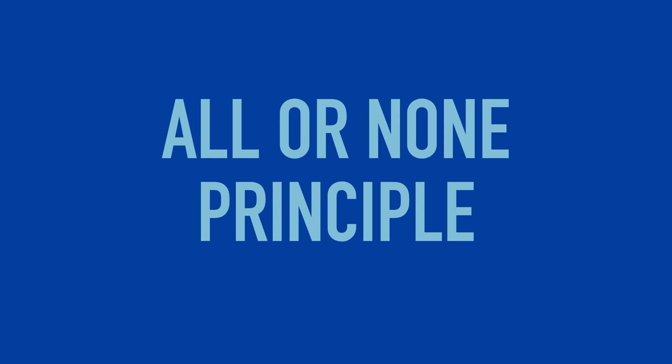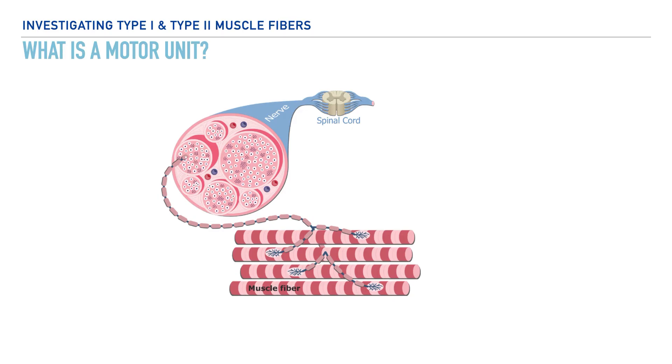Now that we've hopefully created a solid framework to understand type 1 and type 2 muscle fibers, let's talk about a principle that will help to solidify our understanding of this concept, which is called the all-or-none principle.